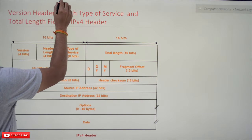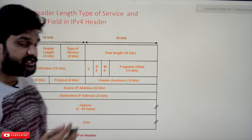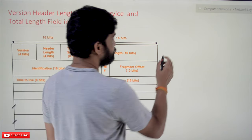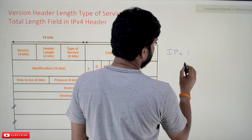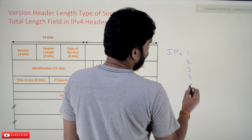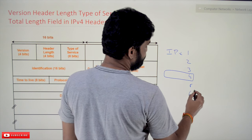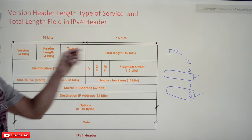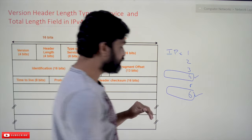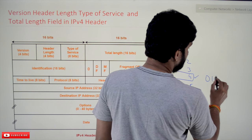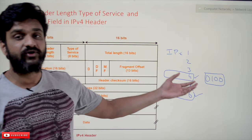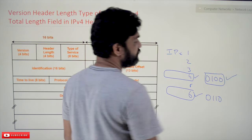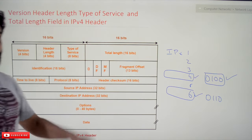Starting with the Version field — it occupies four bits. There are different versions of IP, from IPv1 to IPv6. Out of these, only two versions are practically in use: IPv4 and IPv6. The version code is accommodated in these four bits. The four-bit code for IPv4 is 0100 (binary for decimal 4), and for IPv6 it is 0110. In this course we will discuss only the IPv4 fields.